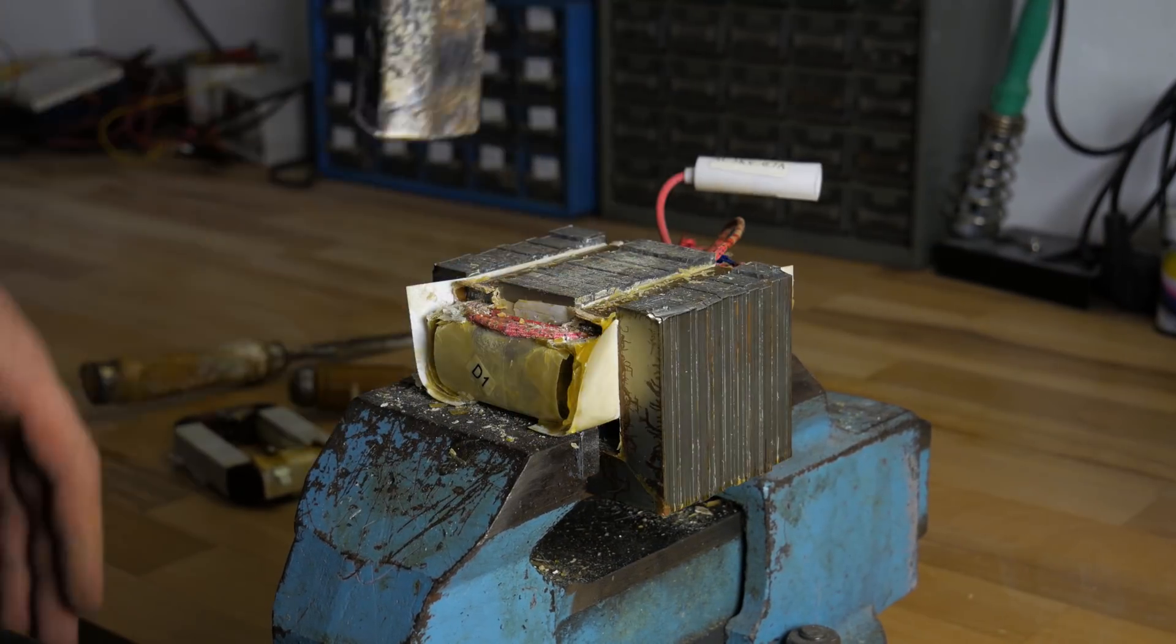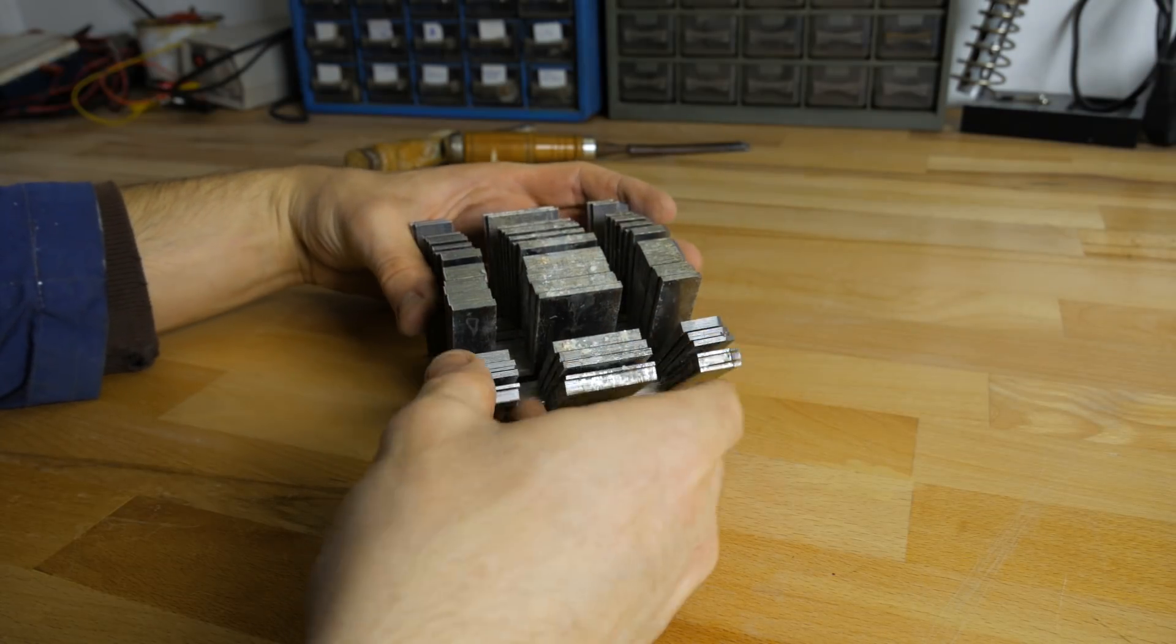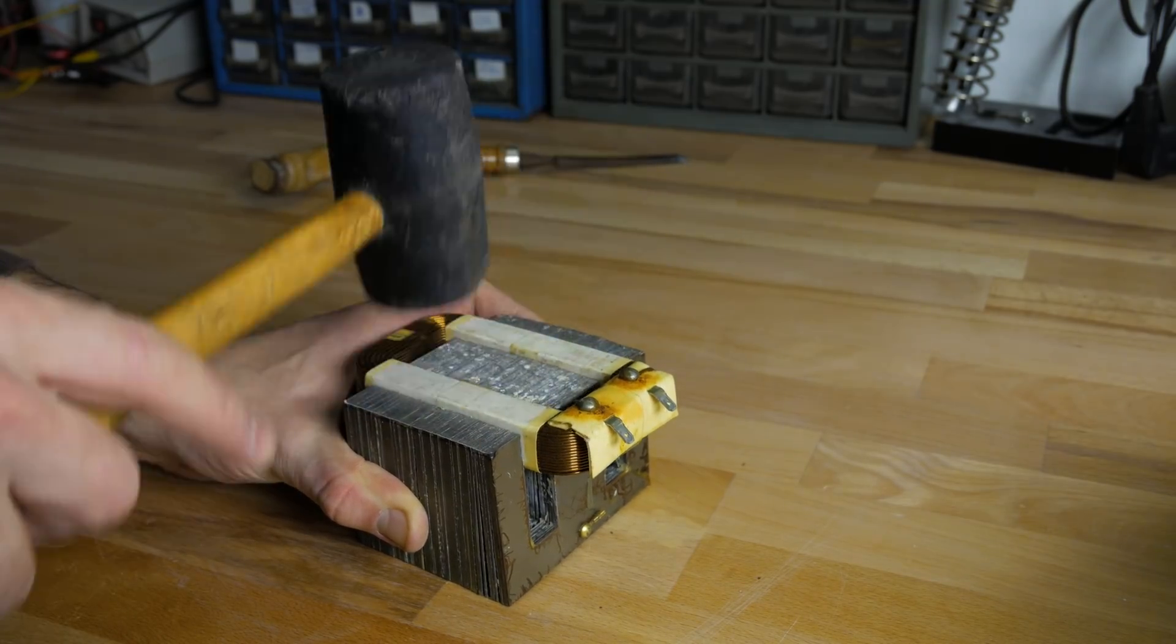As you can see when I punch the secondary coil out my core separates but that's not such a big deal, just carefully hammer back down the primary winding and that's it.